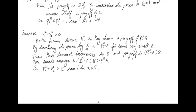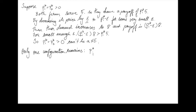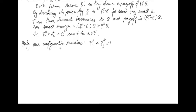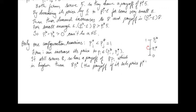This leaves only one remaining configuration: one firm i sets a lower price than firm j, and the higher-priced firm sets a price of 1. So Pj* is 1, and Pi* is something between 0 and 1. But what firm i can do is raise their price just a little bit — they'll still get demand of 8 because they still have the lower price, but they'll get a higher payoff. So it can't be that Pi* is the best response to Pj*. By process of elimination, there's no configuration of pure strategies that could be a Nash equilibrium.